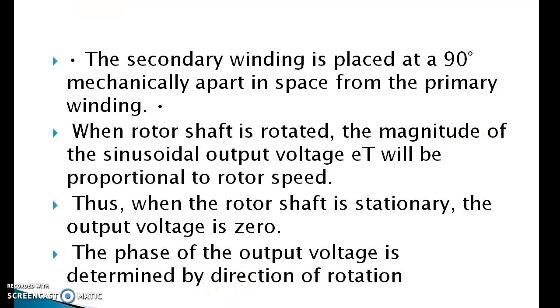The secondary winding is placed 90 degrees mechanically apart in space from the primary winding. When rotor shaft is rotated, the magnitude of the sinusoidal output voltage Et will be proportional to rotor speed. Thus when the rotor shaft is stationary, the output voltage is zero. The phase of the output voltage is determined by direction of rotation.